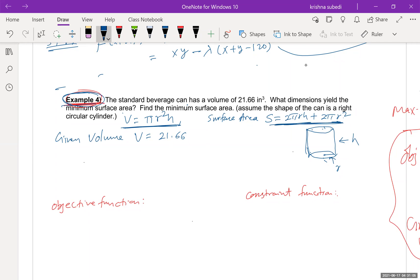What is also given is that the volume of the can is 21.66 inch cube, the unit cube. Now, in the previous situations, we are given objective function, we are given constraint. But in real life situation, the function doesn't come just like that.